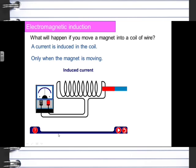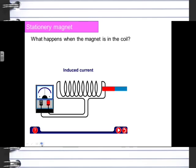The current is induced when the magnet moves into the coil, and only when the magnet is moving. When there's no movement, we get no current. When the magnet is stationary inside the coil, there's nothing — it's only when the magnet is moving that we get a current.